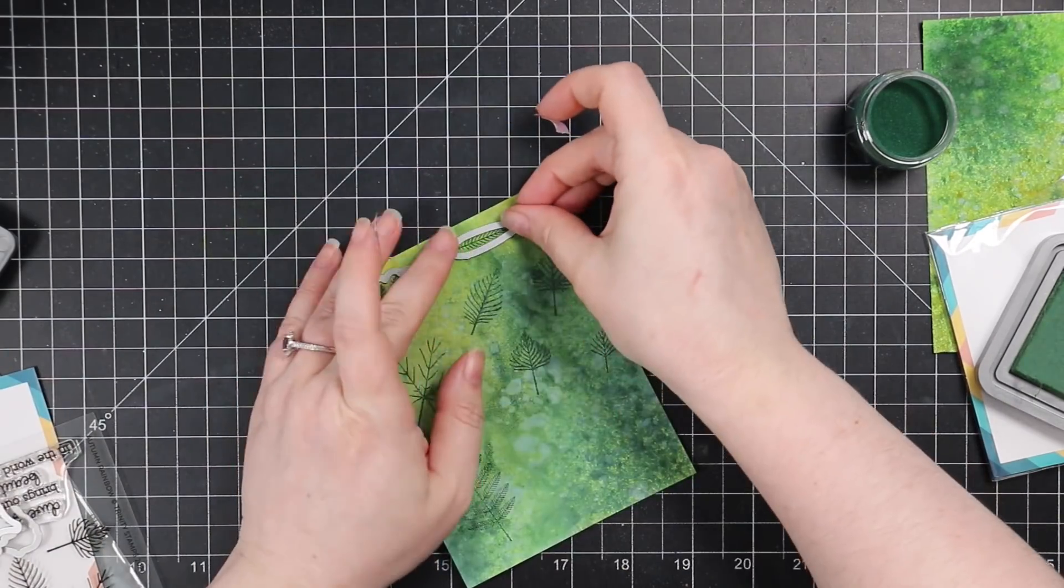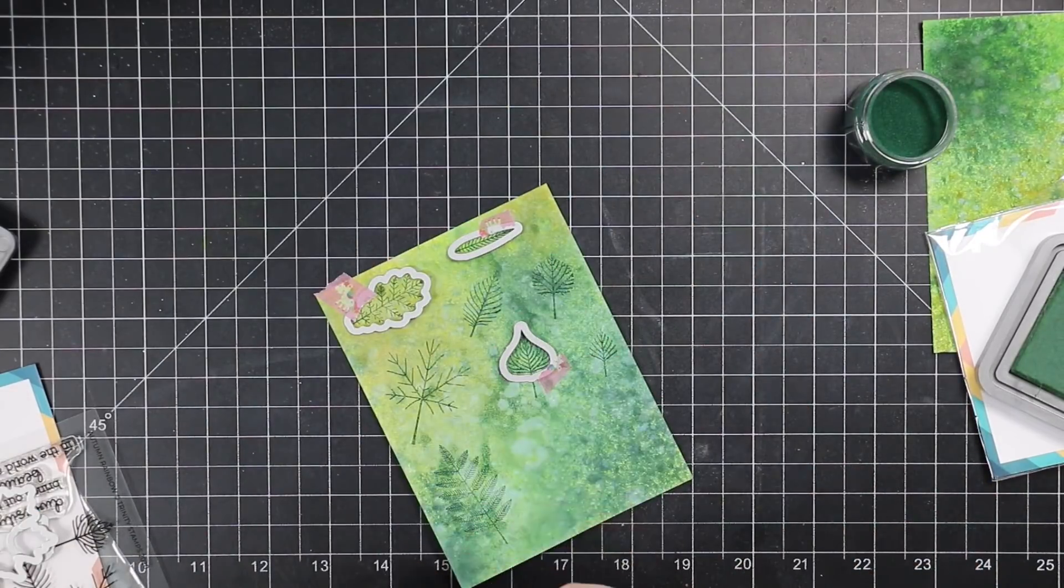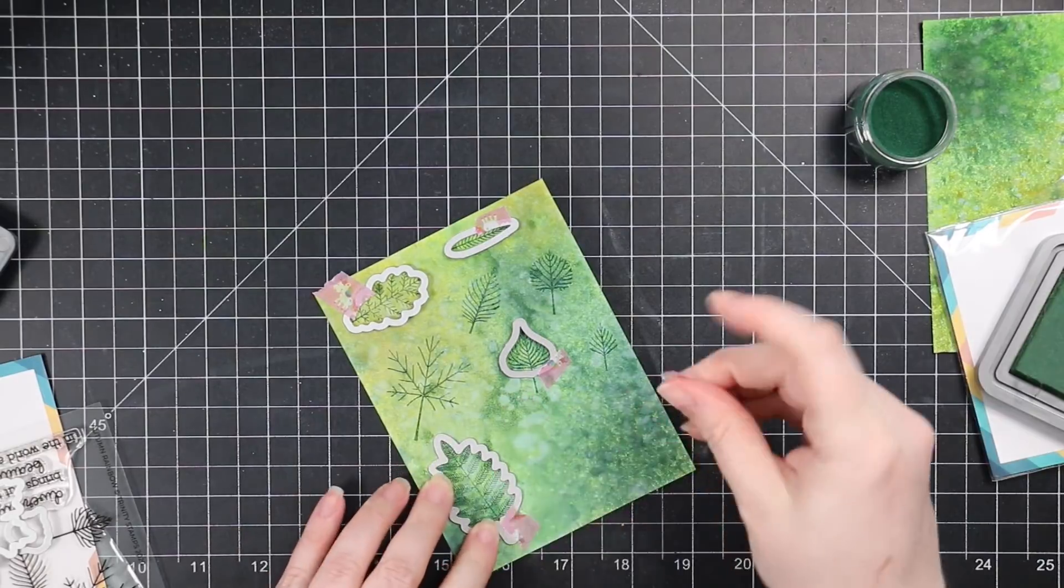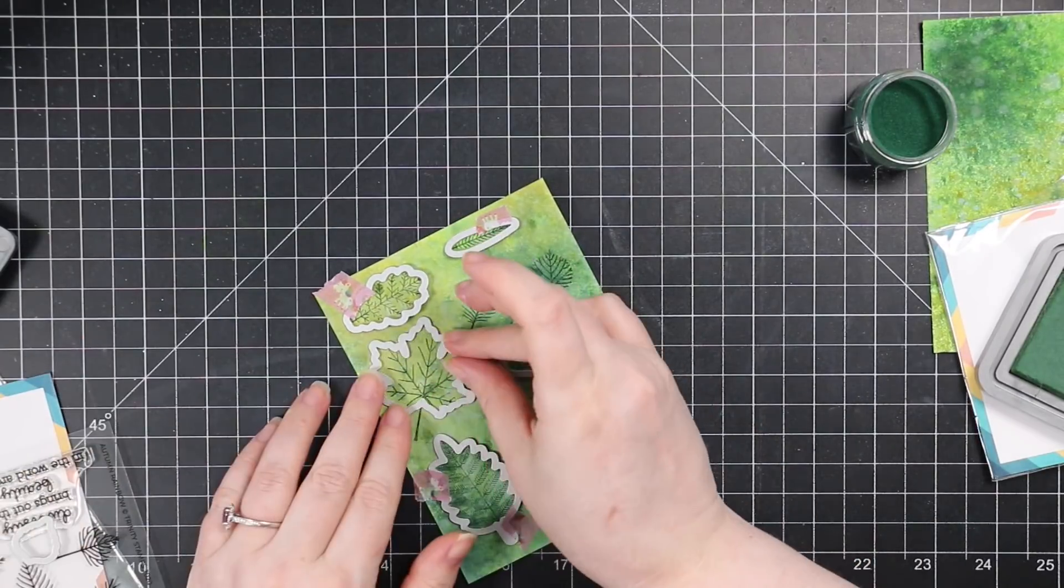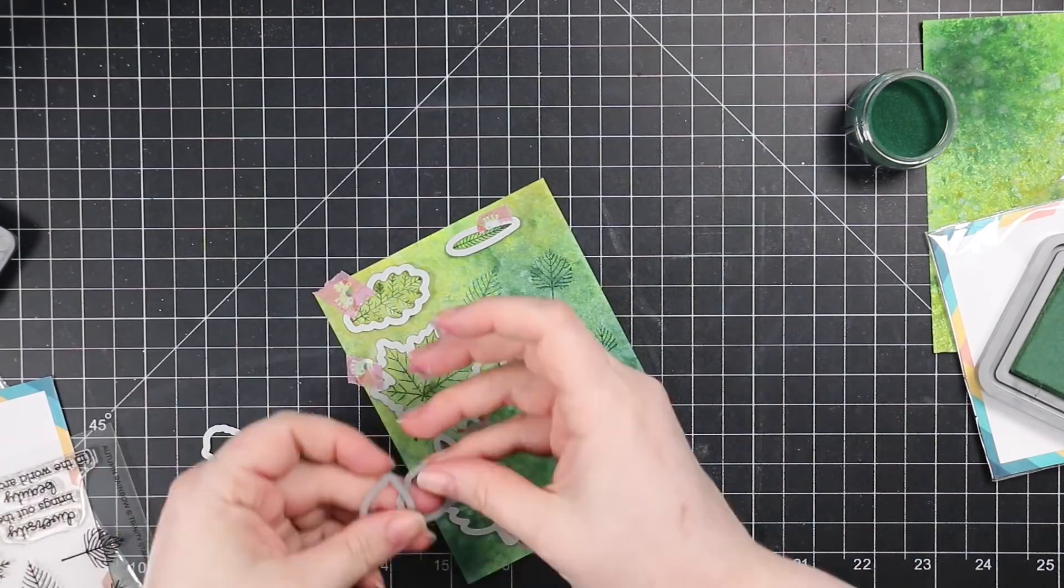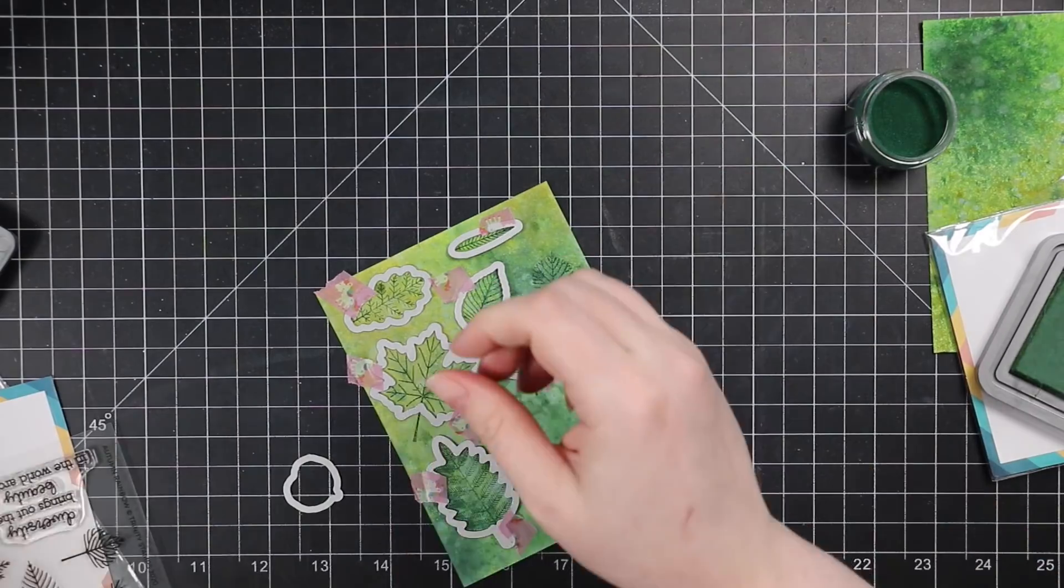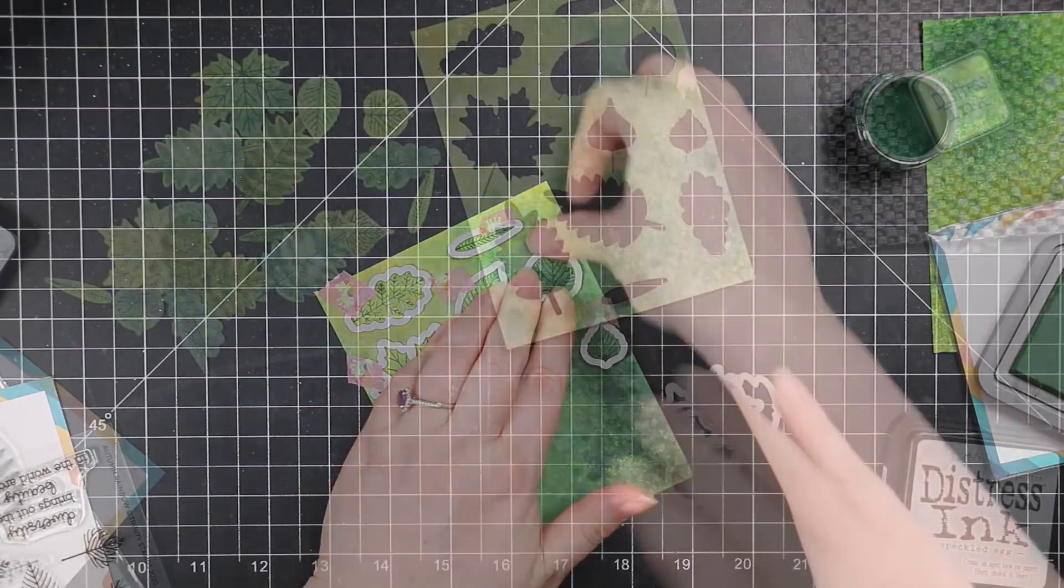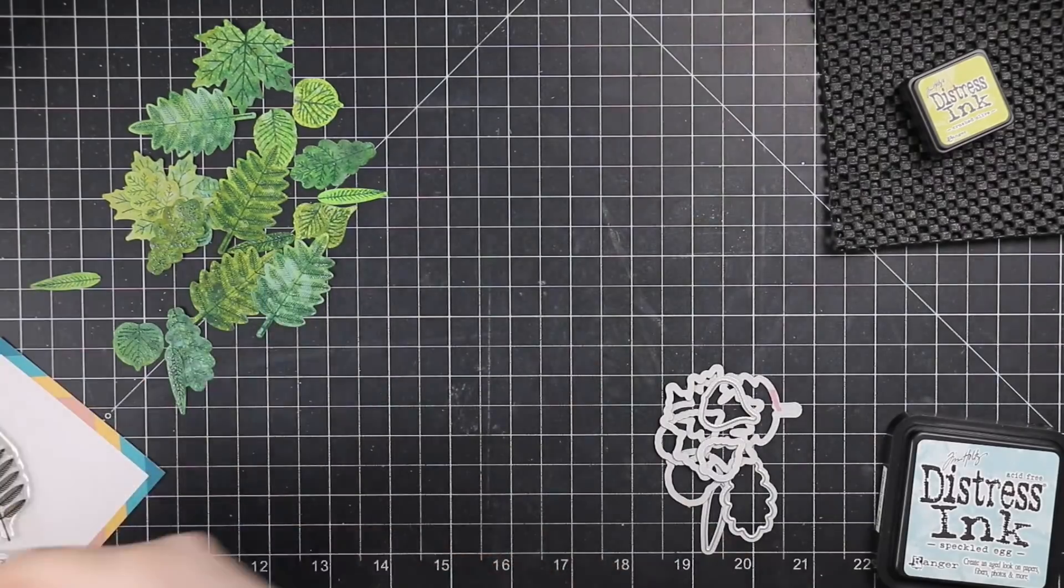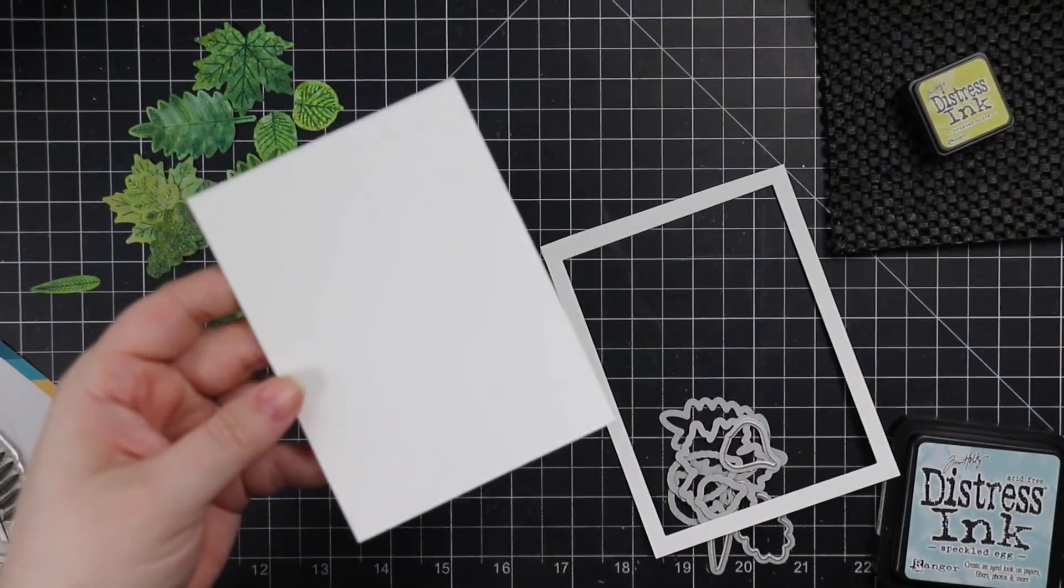So after I heat embossed these, I used the coordinating wafer dies and off camera I did the same thing with the second piece. And then I also stamped, like I used all these pieces. I stamped several of the other leaves separately and then heat embossed them as well and die cut them. So I use up all my little bits and pieces. So I have this little pile of these leaves here.